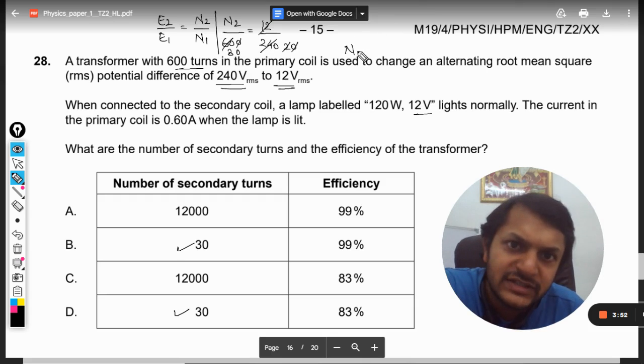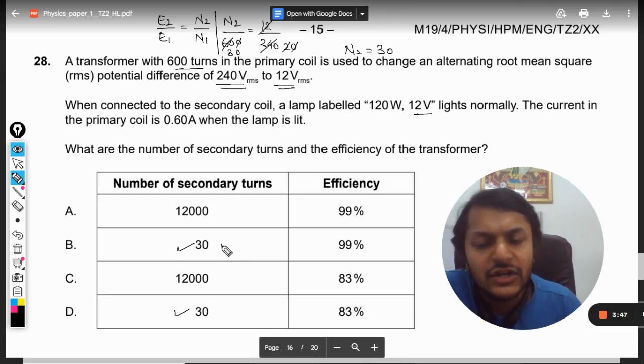So it is coming out to be 20 and this is 30. So from this simple calculation we get n2 is equal to 30 turns. So there we go, yes, our answer is either B or D.